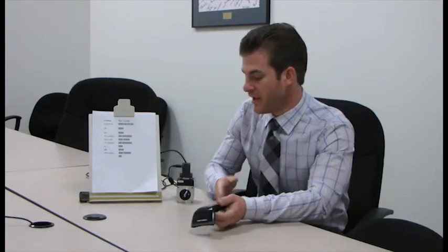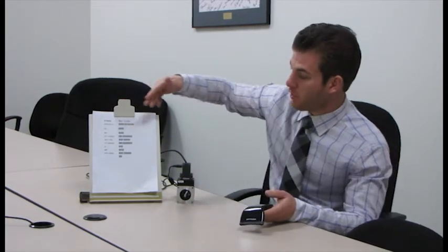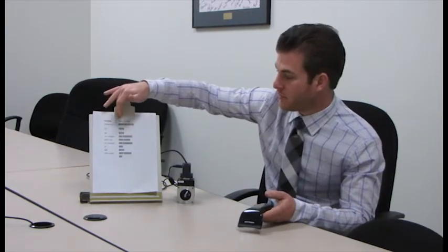Hello, this is a demonstration on how to use a common barcode scanner with an Animatics Class 5 smart motor. What we've done here is we've printed out barcodes translated from smart motor code into the standard Code 39 barcode font.